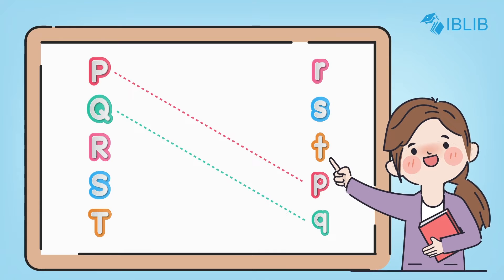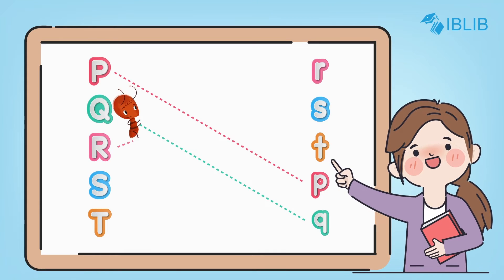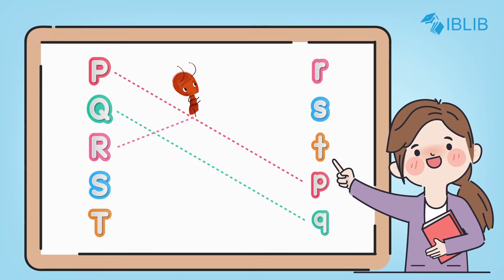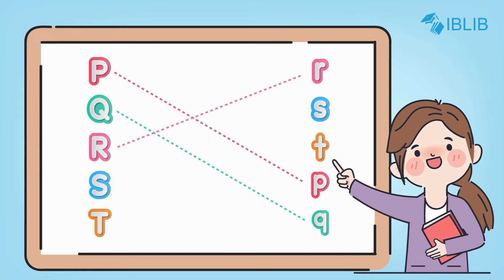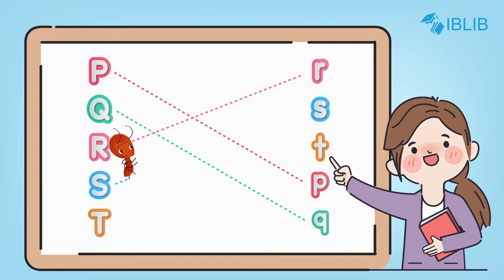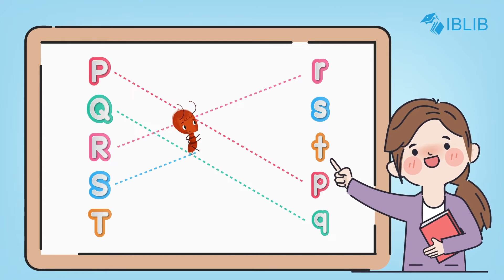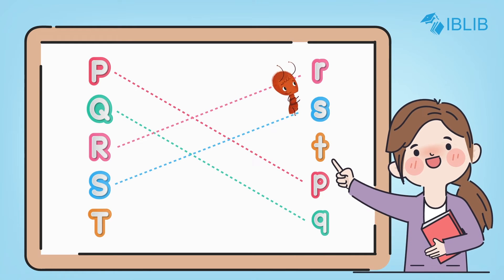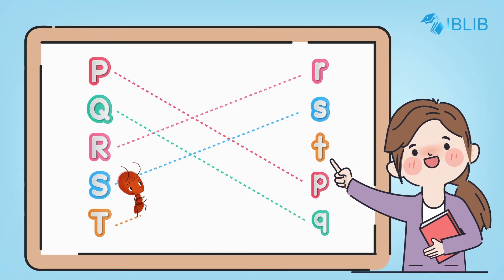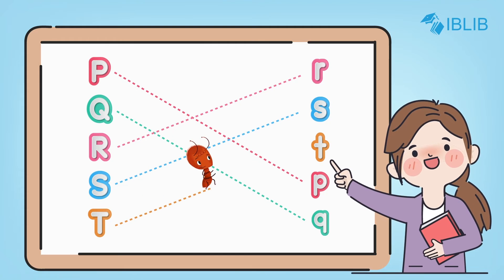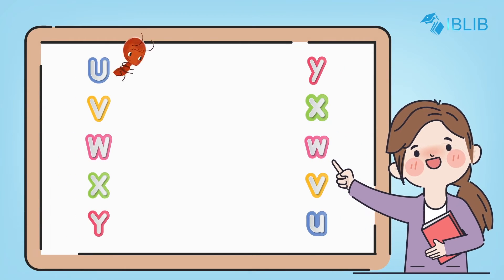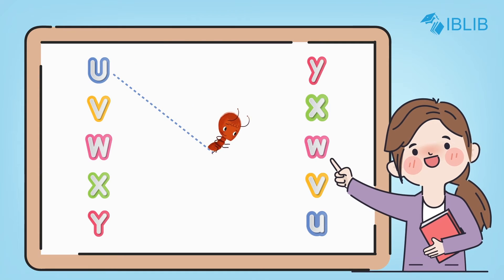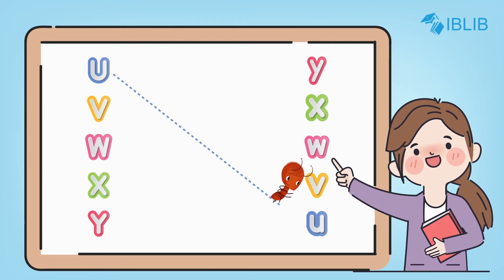Match capital R with small r. Match capital S with small s. Match capital T with small t. Match capital U with small u.